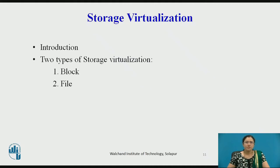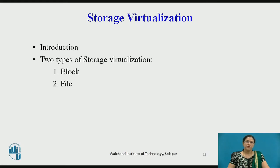In storage virtualization, multiple network storage resources are presented as a single storage device for easier and more efficient management. It provides various advantages including improved storage management in a heterogeneous IT environment, easy updates, reduced downtime, better storage utilization, and automated management. There are two types of storage virtualization: block and file. Block works before the file system exists and replaces the controllers, taking over at the disk level. For file virtualization, the server that uses the storage must have software installed to enable file-level usage.